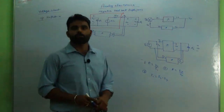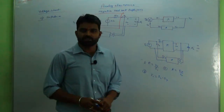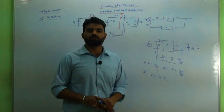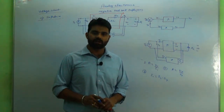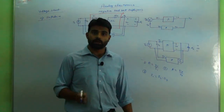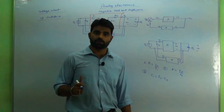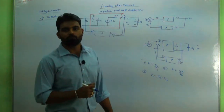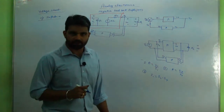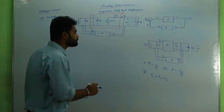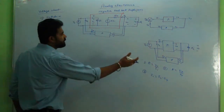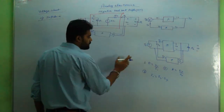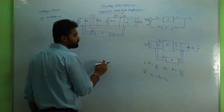Hello everybody, welcome to the channel SRS. This is Sumit Roy and we are studying analog electronics — negative feedback amplifiers, specifically voltage shunt feedback. We have already done the input impedance derivation in an earlier episode, so I have already drawn the diagram. We'll continue from that and now focus on output impedance.